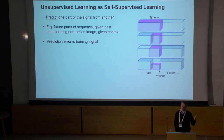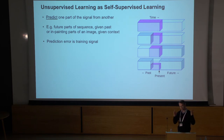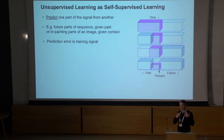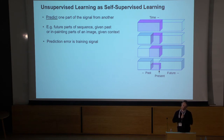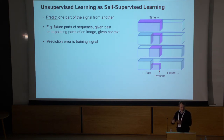One approach is to essentially take your signal and break it into two pieces — take one piece as the input and try to predict the other piece. In the image example, you could remove some chunk of the image and try to in-paint that from the surrounding region. Or, as we'll look at in this talk, you could take a video sequence, feed in the first set of frames, and then try to predict subsequent ones going further into the future.